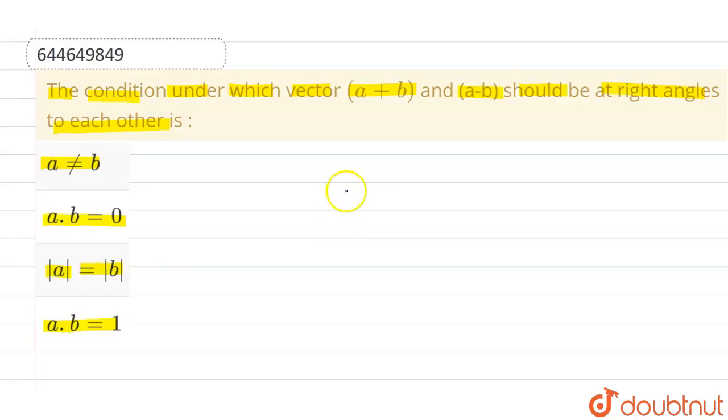So what we are given is a vector plus b vector, this particular vector, and a vector minus b vector, they should be perpendicular to each other. The angle between them should be 90 degrees.